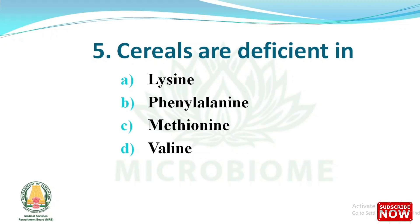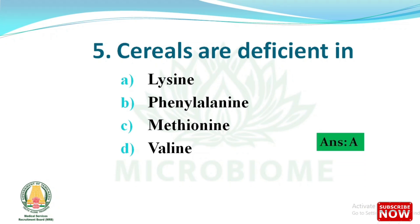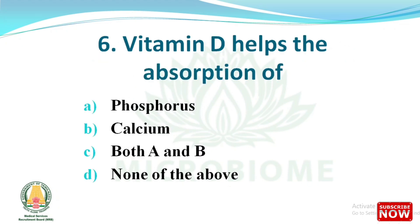The next question: cereals are deficient in which of the following? The options are lysine, phenylalanine, methionine, valine. The right answer is option A, lysine. Next question: vitamin D helps the absorption of which of the following? The options are phosphorus, calcium, both A and B, none of the above. The right answer is option C, both A and B — that is, phosphorus and calcium.